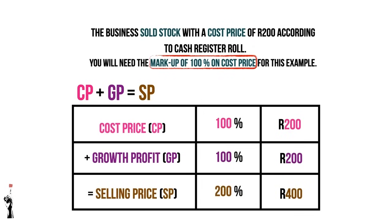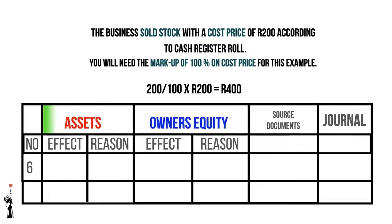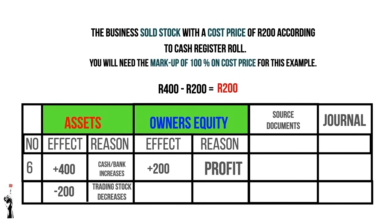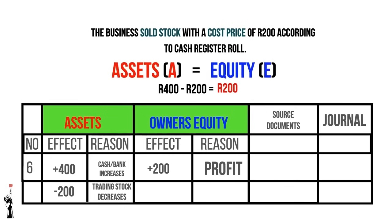Your assets increase with 400 rand — the selling price — because cash or bank increases as the business received the money. Assets also decrease with 200 rand — the cost price — because trading stock decreases as we sold the stock. Owner's equity increases with 200 rand, which is 400 rand minus 200 rand, giving a profit of 200 rand. Using the equation test: assets equal owner's equity — both are 200 rand. The source document is the cash register roll and the journal is the CRJ because the business received money.